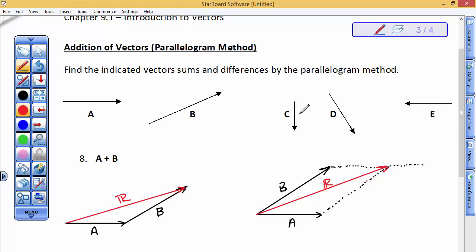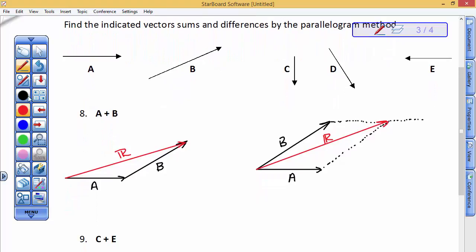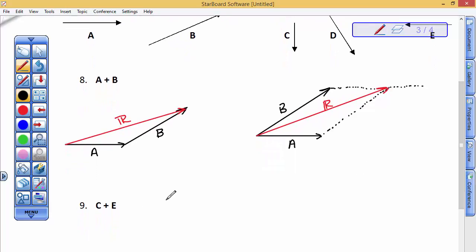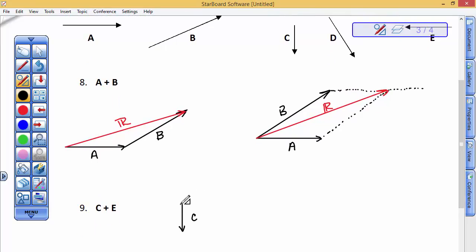So C and E, I'm going to put their tails together. C goes downward. It's not as long. E goes to the left. C goes downward. I believe that C was shorter than E was. So here's vector C. I'm going to go back and look at vector E. Yeah, it goes to the left. So I'm going to draw it to the left tails together. And it's about that long.